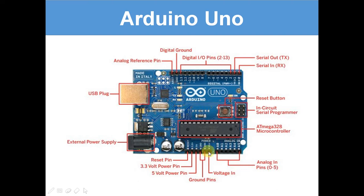This is voltage in. And then this is reset. The reset pin works like a reset button — if you press it, it will start the program over again. If you apply current to the reset pin, it will completely wipe whatever's on the Arduino board.